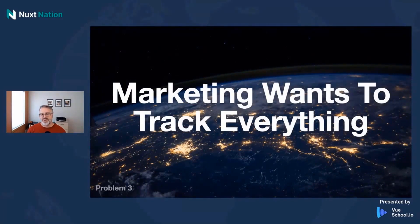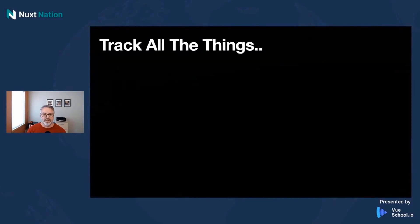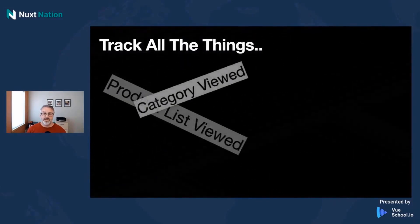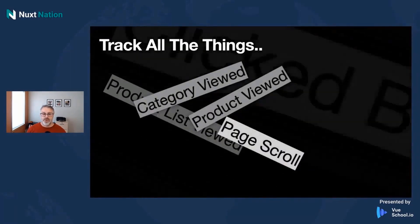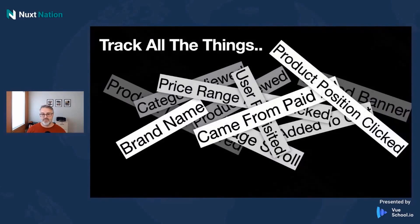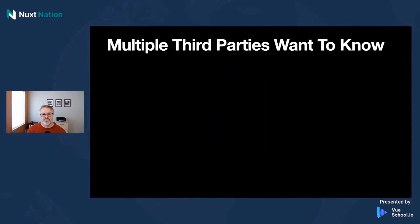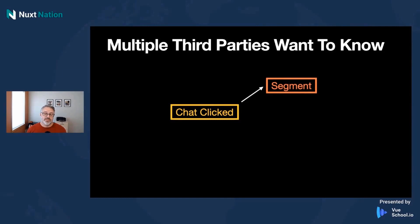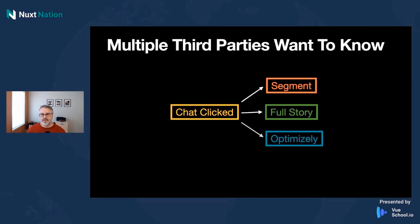The third problem is that marketing wants to track everything. Not only do they want to track things like product list view, but category viewed, product viewed, and so on. It just keeps piling on with different events, different payloads, and all this different information. Even worse, multiple third parties want to know about these different events. When you click chat, for example, Segment needs to know about it because it talks to other integrations. Likewise, FullStory might be concerned because it's figuring out whether people are using chat effectively. And you may even be doing A/B testing, so Optimizely might care whether you're clicking chat.